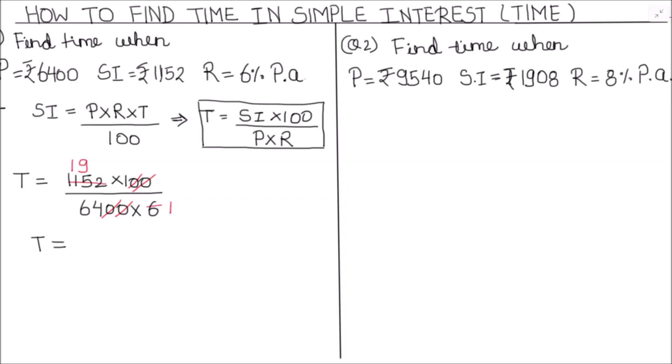So 6 times 9 and 6 times 2. Now we got this as 192 divided by 64 and we can simplify it further. This is reduced to 48 divided by 16, and we know that 16 times 3 is 48, so the answer is 3 years.